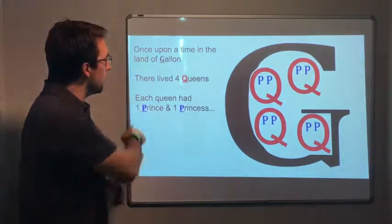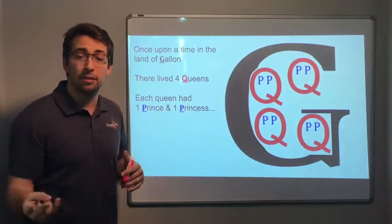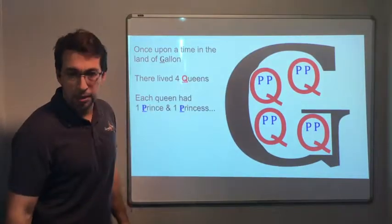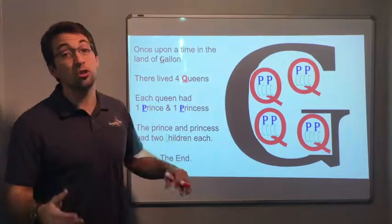Now each queen, she had one prince and one princess. So she had two kids, one prince and one princess. And the prince and the princess had two children each.